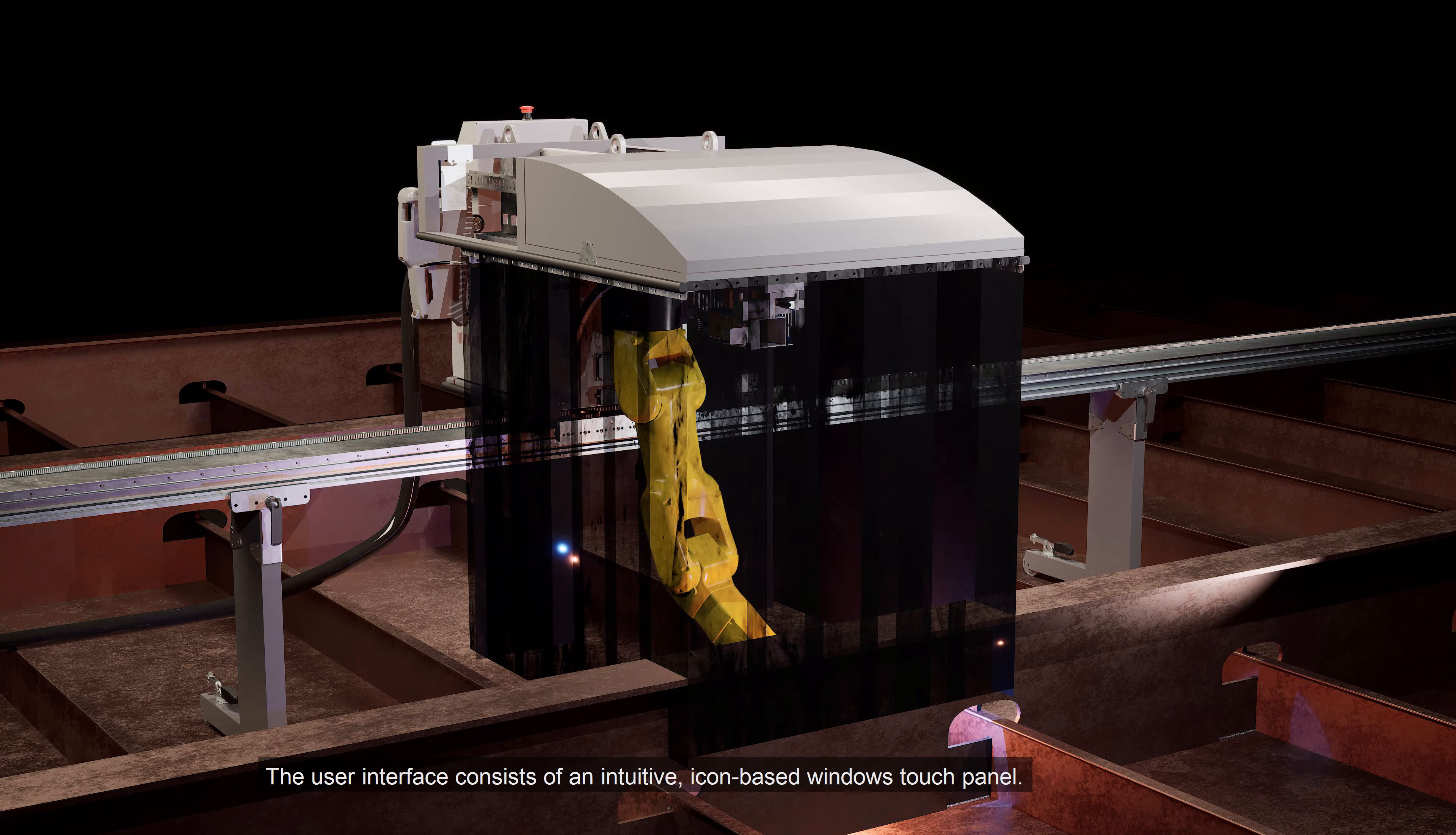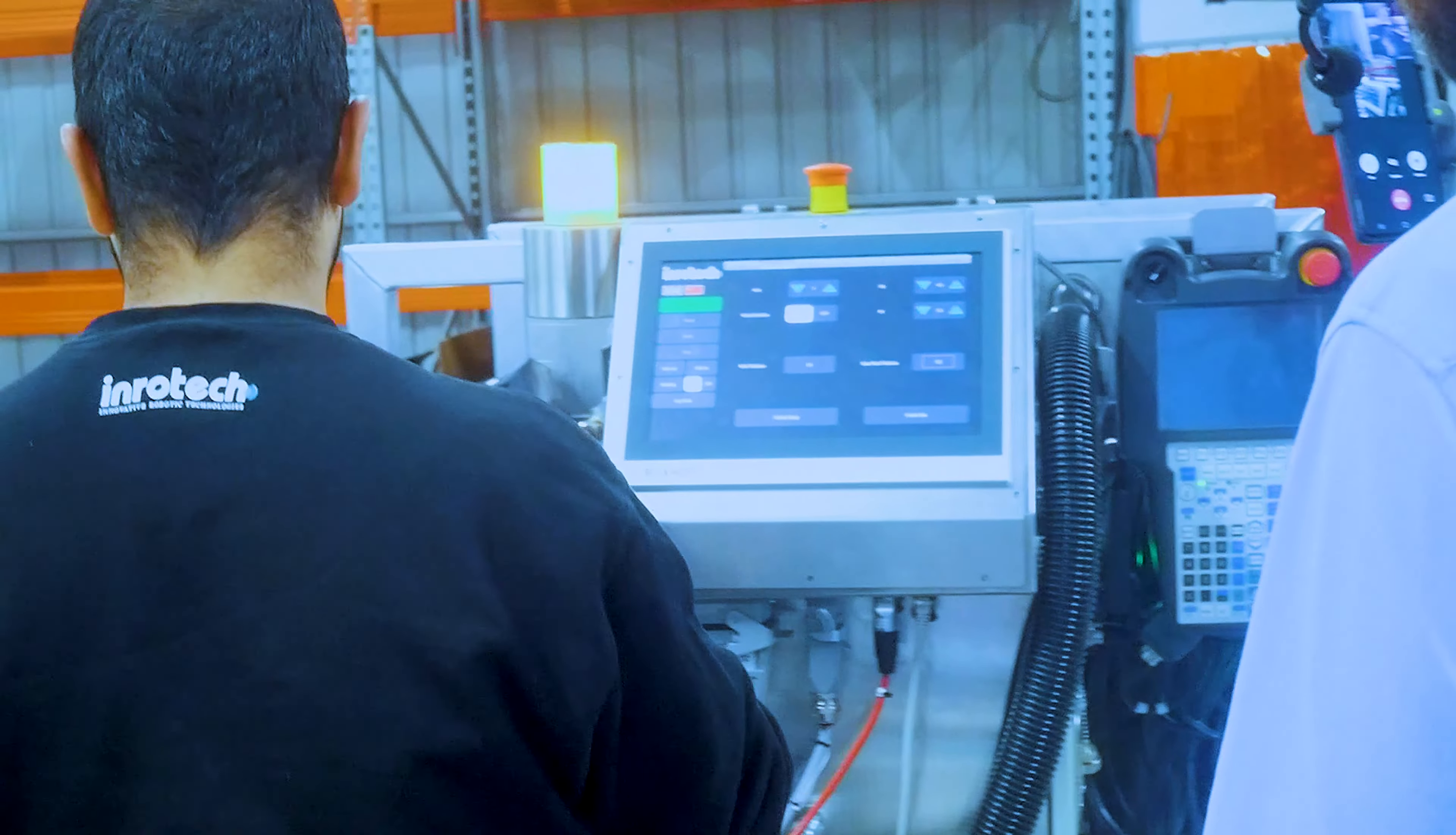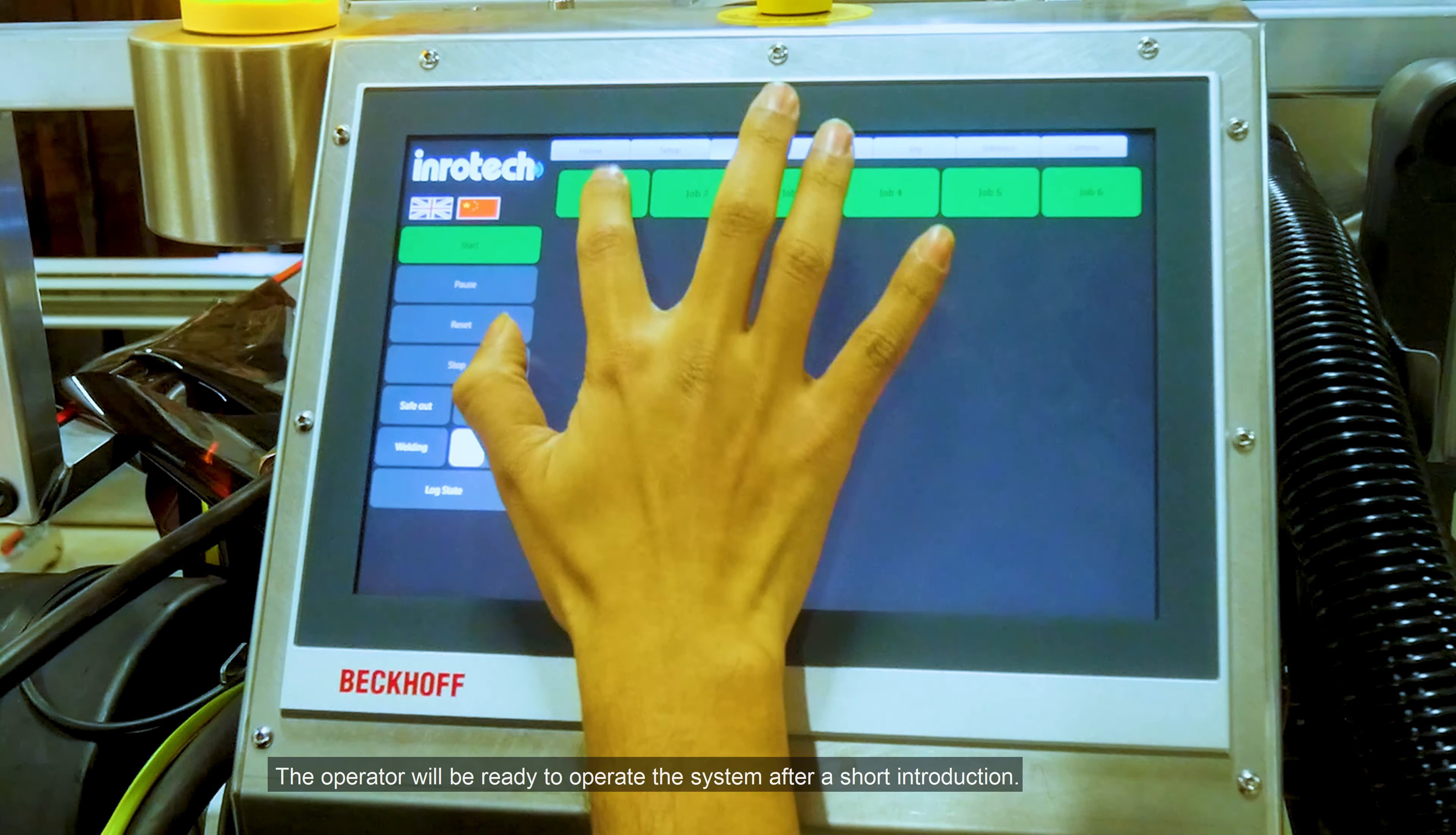The user interface consists of an intuitive icon-based Windows touch panel. Here, the operator will find all commands in clear language. No codes and no programming are required. No specialist training is required to operate the Inrotec Classic. The operator will be ready to operate the system after a short introduction.